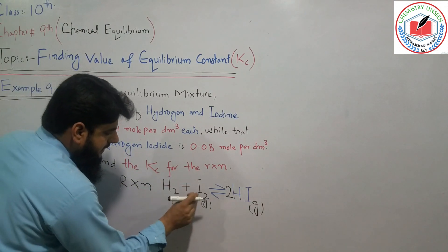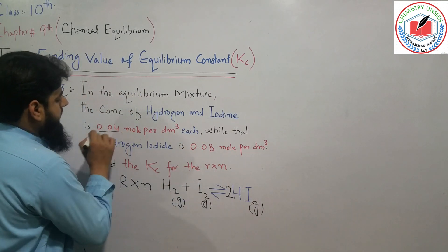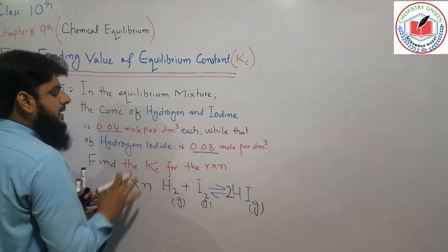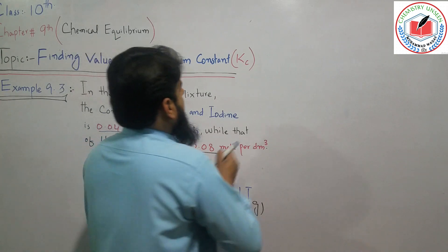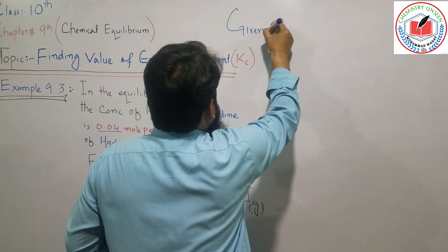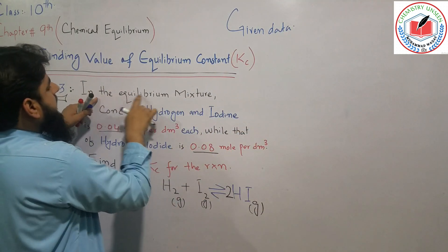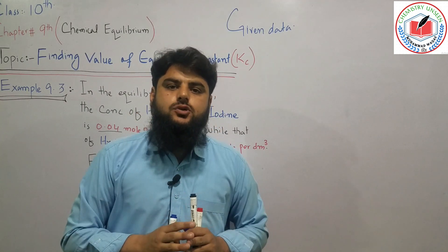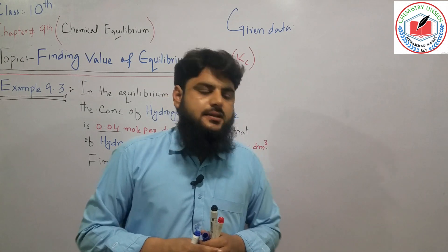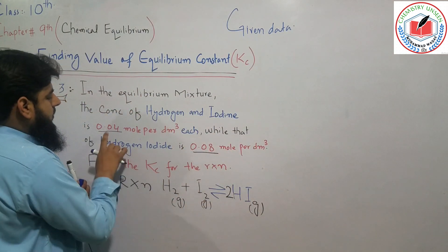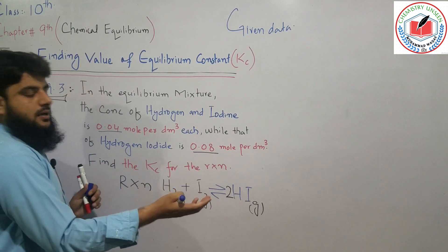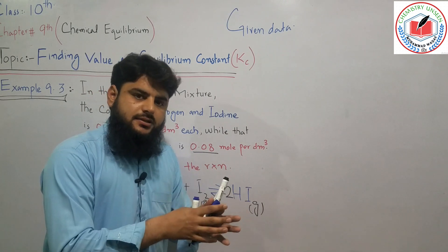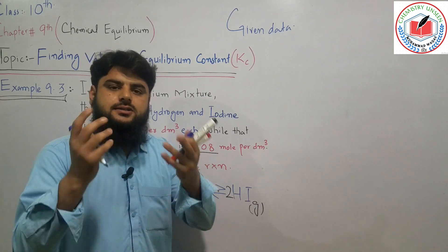This is the example of hydrogen iodide. The given data for the equilibrium mixture is: the equilibrium mixture means that the reactants and products have a constant concentration ratio. Hydrogen concentration is 0.04 mol/dm³, iodine concentration is 0.04 mol/dm³, and hydrogen iodide concentration is 0.08 mol/dm³.